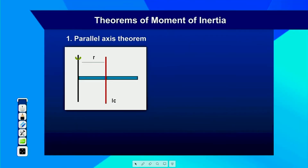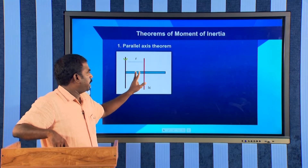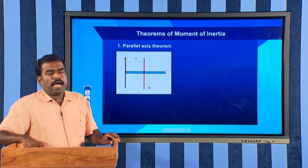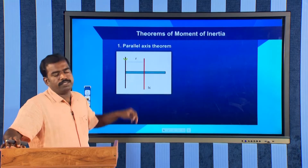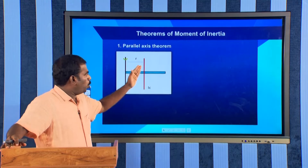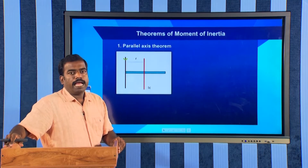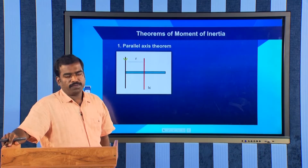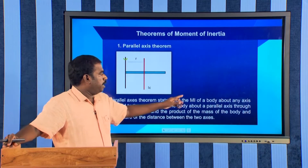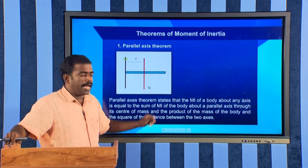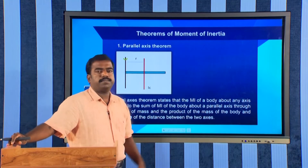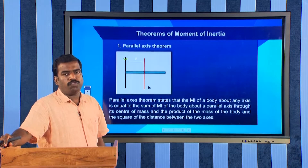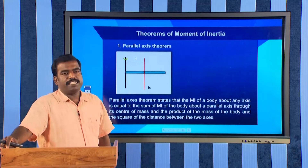The summary of the parallel axis theorem: suppose you have a rigid body — this rectangular rod is a rigid body. You need to find the moment of inertia of this body about an axis passing through one of its edges or ends, and you know the moment of inertia of the same body about an axis passing through the centre of mass. The parallel axis theorem states that the moment of inertia of a body about any axis is equal to the sum of the moment of inertia about a parallel axis through its centre of mass and the product of the mass of the body and the square of the distance between the axes.